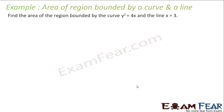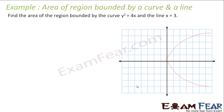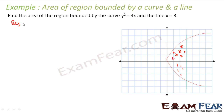Let's take one more example. We have to find the area of the region bounded by y² = 4x and the line x = 3. Simple question — you have this parabolic curve and this vertical line, and the common area is the whole region enclosed. The star area and the dash area are symmetrical about the x-axis.